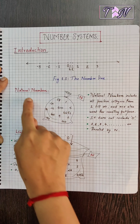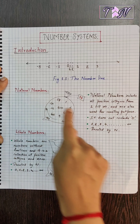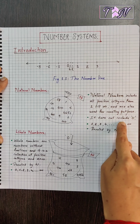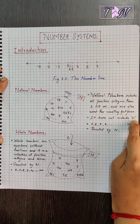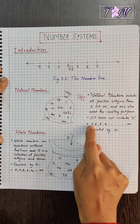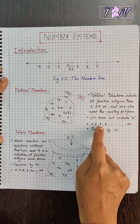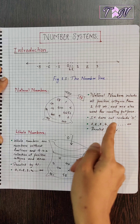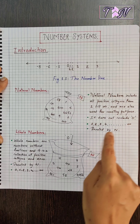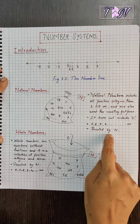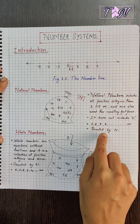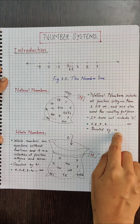Remember that natural numbers do not include 0. So it starts with 1, 2, 3, 4, and so on till infinity. This collection is denoted by N.